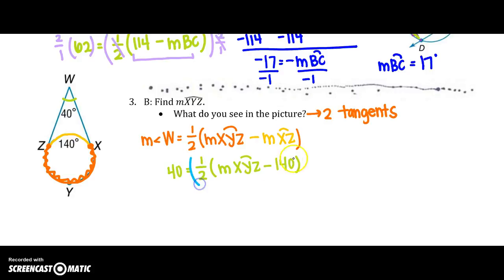So my angle W is 40 degrees equals one half of the measure of XYZ minus 140. Again, multiplying both sides by 2 over 1. I just had to check to make sure I was subtracting when I did that correctly. Measure of XYZ minus 140 equals 80. Add 140 to both sides.